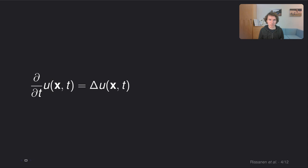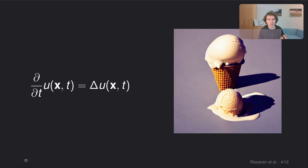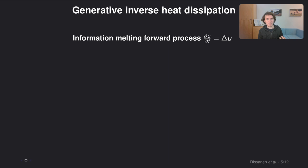So here's the big picture. Instead of purely noising the image, we kind of melt it. You can think of the image as a cone of ice cream that gets melted into a lower resolution version of the original ice cream. And to do this, we use this heat dissipation process.